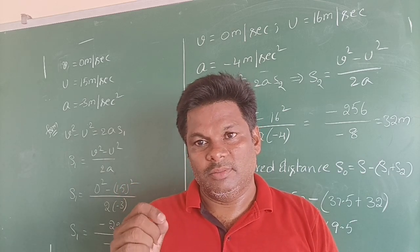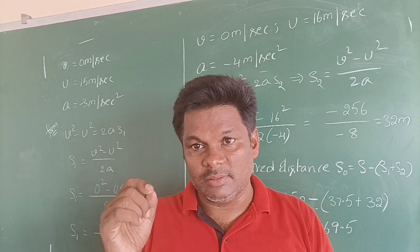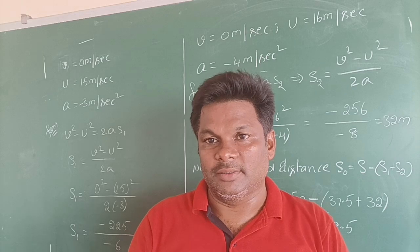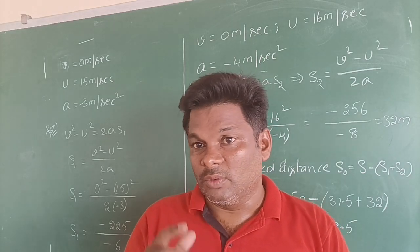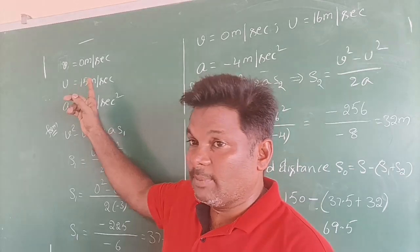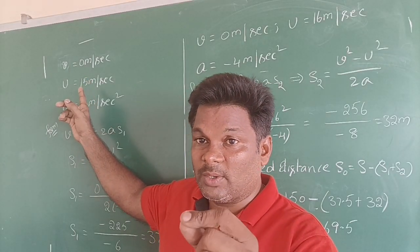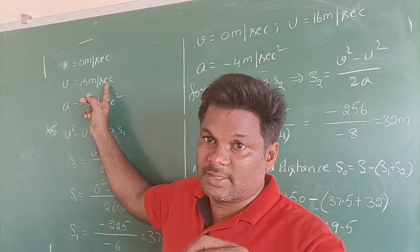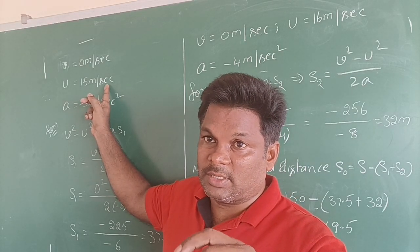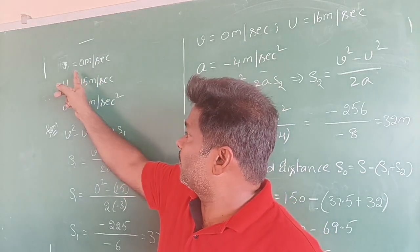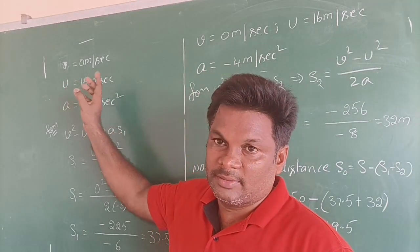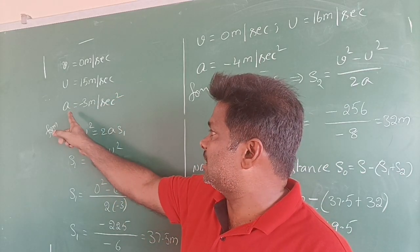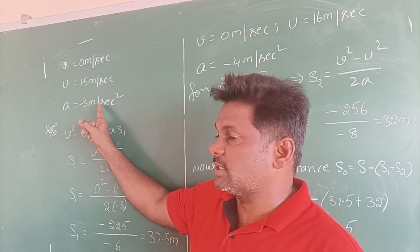So acceleration A is equal to negative side with magnitude. The first car, when he applied brakes, whose velocity is 15 meter per second, and after application of brakes definitely that velocity becomes 0. That is V is equal to 0 meter per second. Then their deceleration, its deceleration a is equal to minus 3 meter per second square.